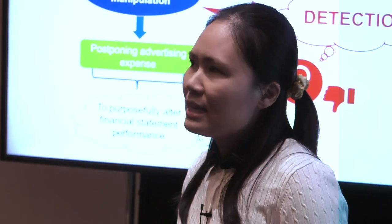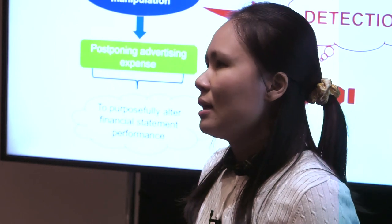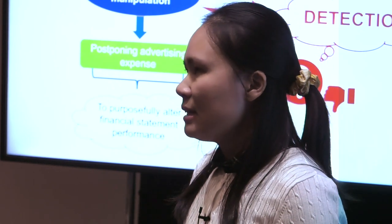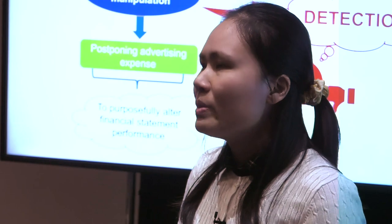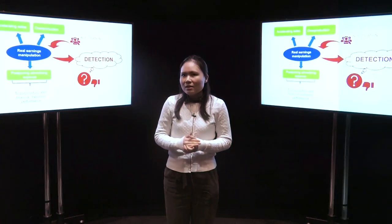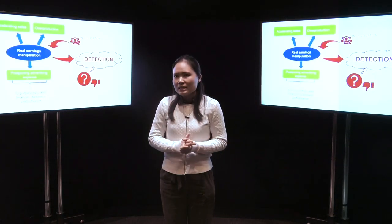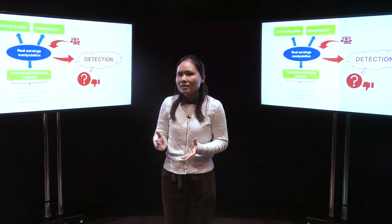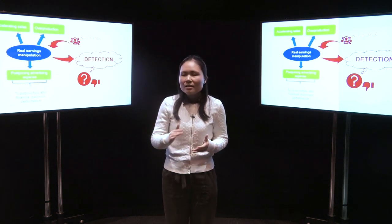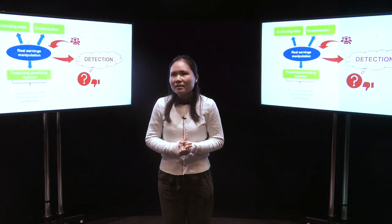Real manipulation is defined as structuring operating activities deviating from normal business activities. There are three types of real manipulation: overproduction, cut costs, or offer price.